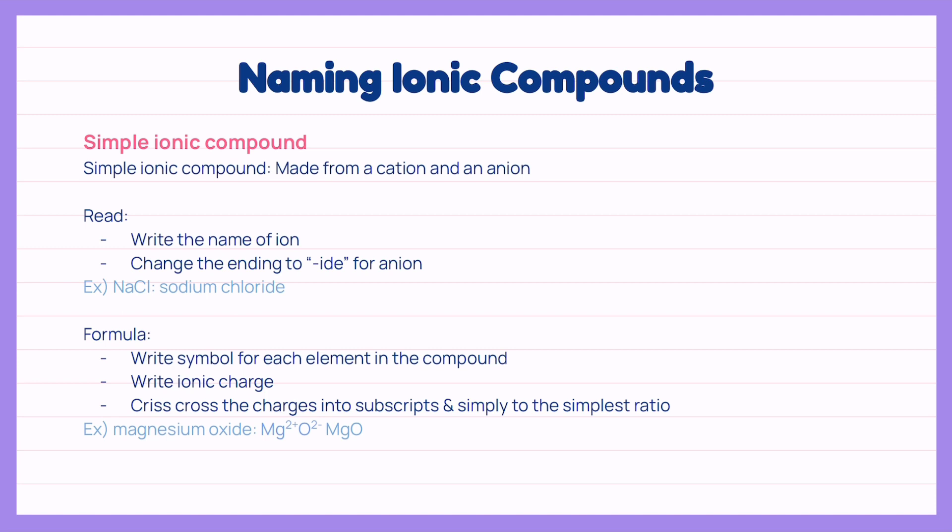Let's start with naming the ionic compounds, specifically simple ionic compounds. Simple ionic compound is made from a positively charged cation and a negatively charged anion. To read the simple ionic compounds, we write the name of the ion according to the periodic table and change the ending of an anion to IDE.